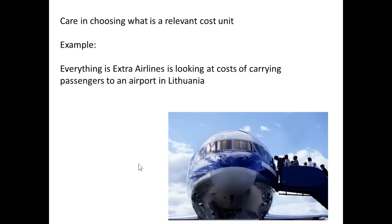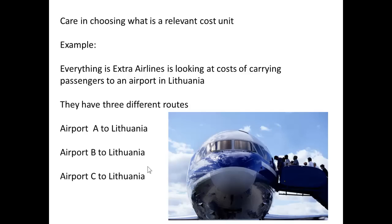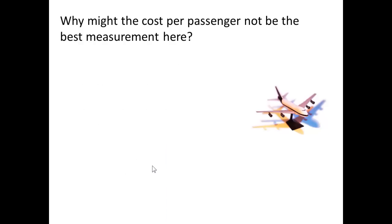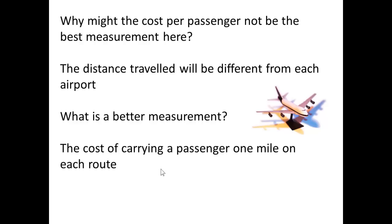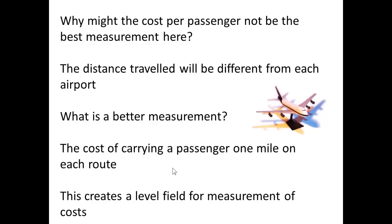You need to take care in actually picking out what your cost unit is. Let's take an airline carrying passengers to an airport in Lithuania — we have three routes: Airport A, Airport B, and Airport C all going to the same airport. We could use the cost per passenger, but this would be a weakness because the distance from each airport would be different. So we need to relate it to both miles and passengers. A better measurement would be the cost of carrying a passenger one mile on each route, giving us a level field for the measurement of costs.